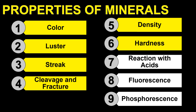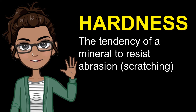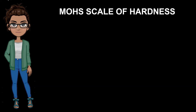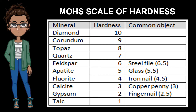The sixth property is hardness. The tendency of a mineral to resist abrasion or scratching is termed as hardness. The Mohs scale of hardness shows the arrangement of minerals from the softest, which is talc, to the hardest, which is diamond. Hardness is the result of intermolecular bonding. The Mohs scale arranges minerals according to their scratch resistance. From softest to hardest, the sequence is: talc, gypsum, calcite, fluorite, apatite, feldspar, quartz, topaz, corundum, and diamond.